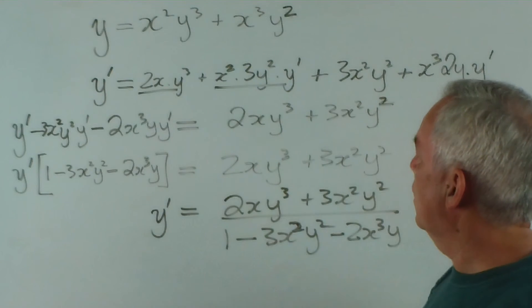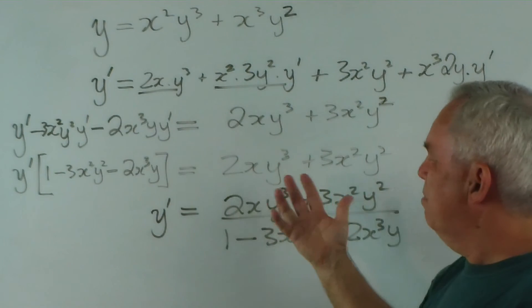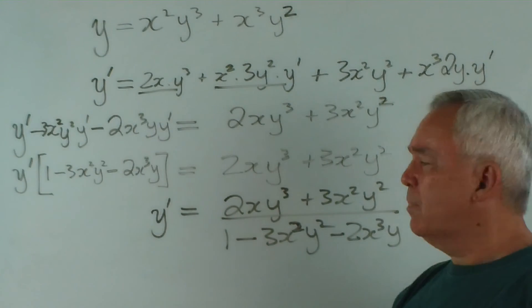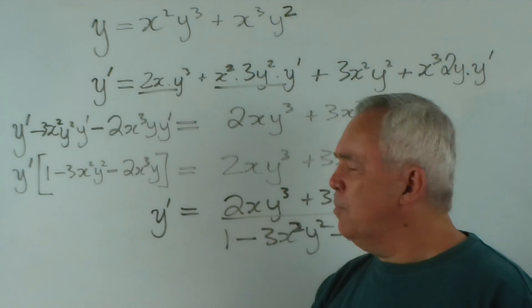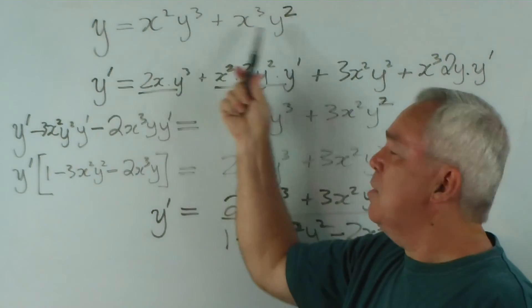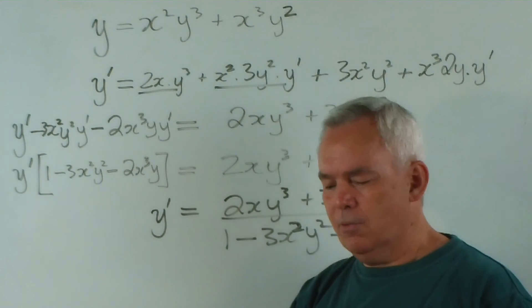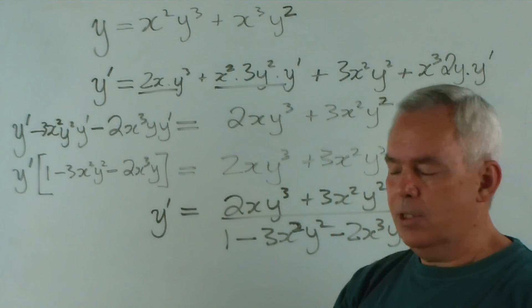It only took us one, two, three, four lines of work. A little bit fiddly, but there it is. Implicit differentiation of an implicit relation or an implicit function. More particularly, relation.